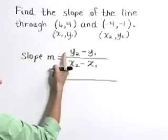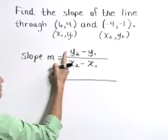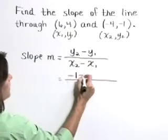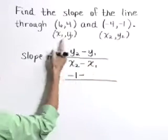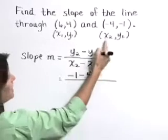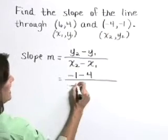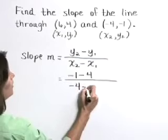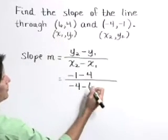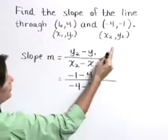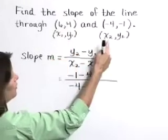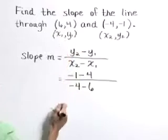So let's subtract our y values and put them in the numerator. y2 is negative 1, minus y1 which is 4, over x2 which is negative 4, minus x1 or 6. Make sure you do that subtraction in corresponding order: y2 minus y1 over x2 minus x1.